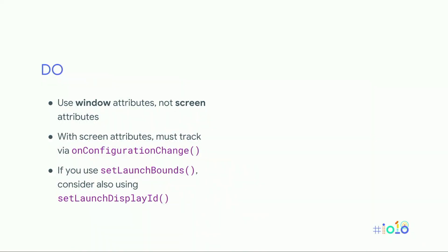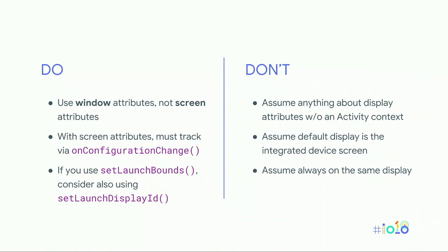What should you do? Always use the size of your window — use your context to get display metrics. To detect changes like being moved to a different display, look at onConfigurationChange. If you want to position yourself on a specific screen, use setLaunchDisplayID. What you shouldn't do: don't assume anything without using your context. Don't try to get the default display by ID — you'll almost certainly get something wrong. Don't assume you're on the built-in display, and don't assume you're always running from the same display.